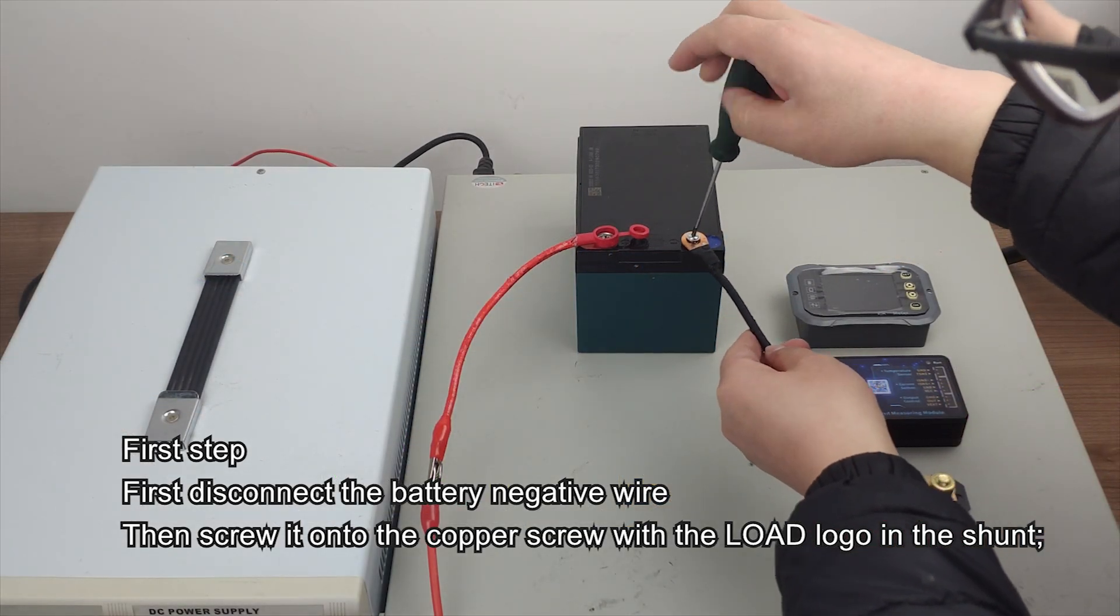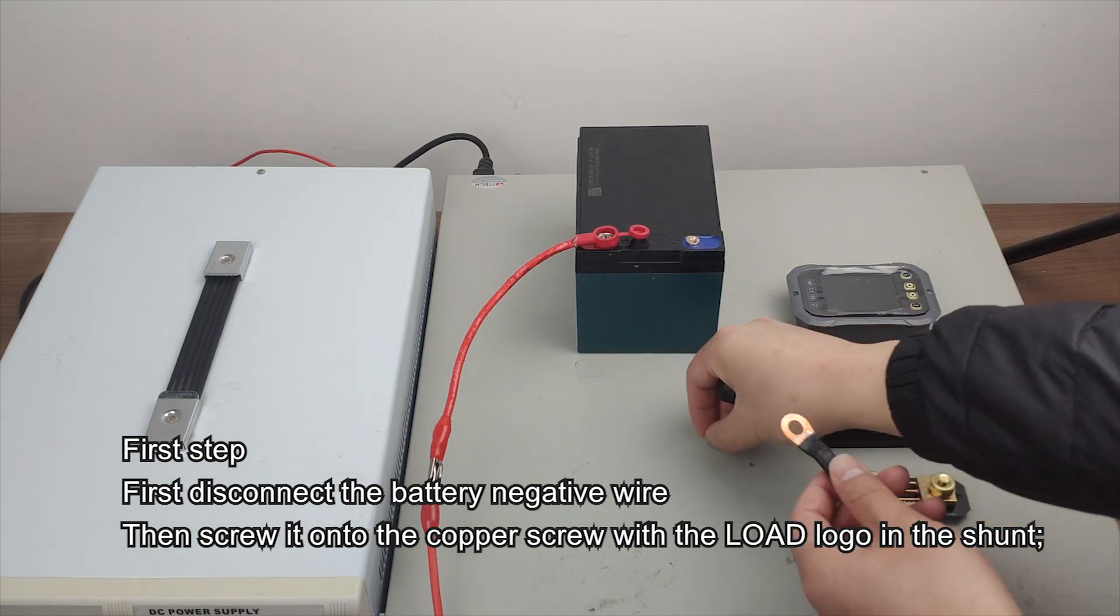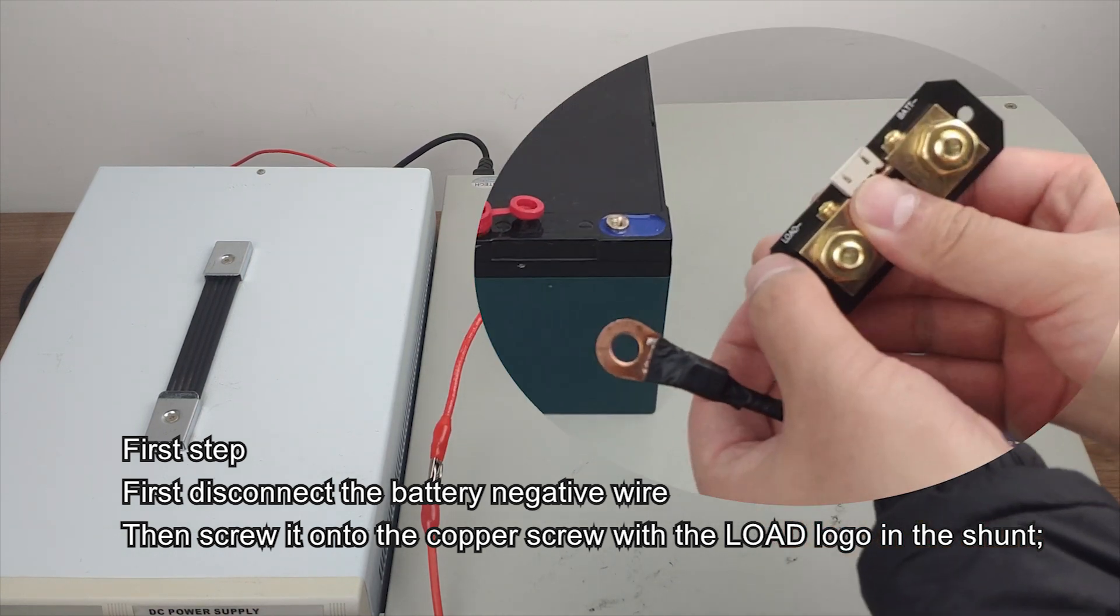First step. First disconnect the battery negative wire. Then screw it onto the copper screw with the load logo in the shunt.